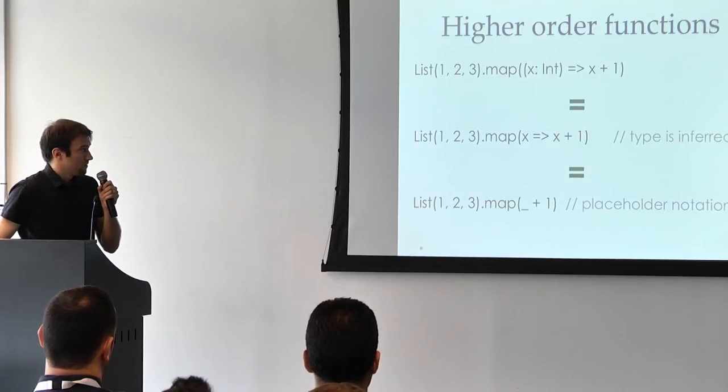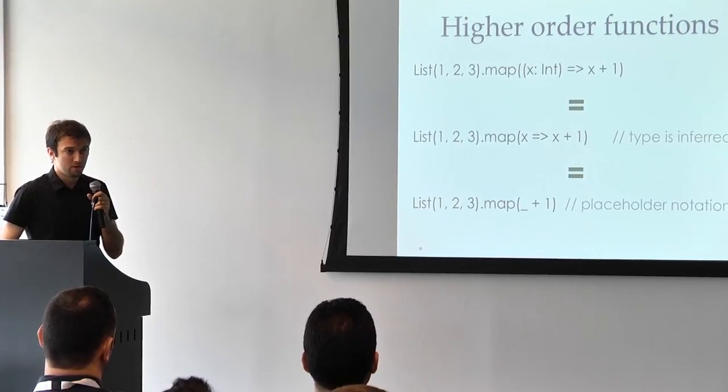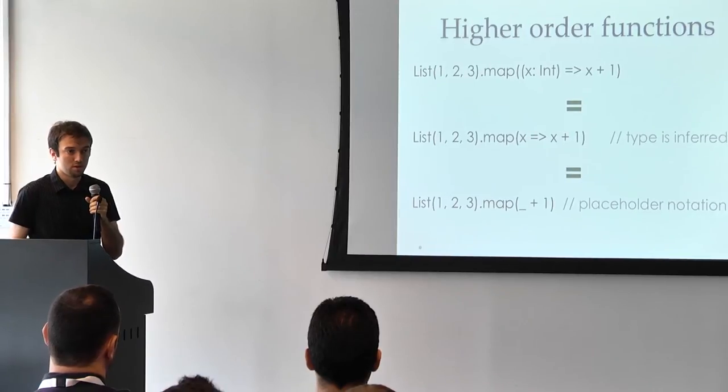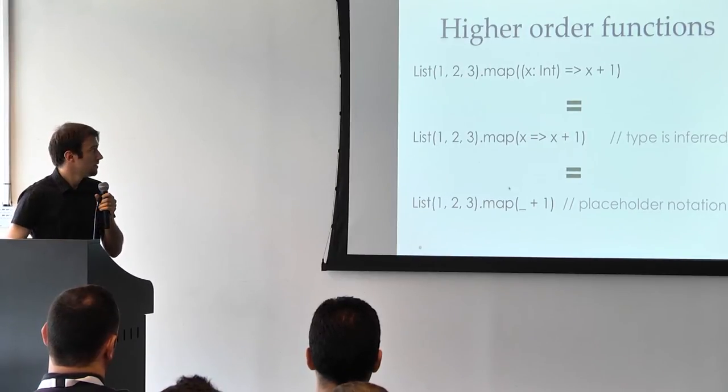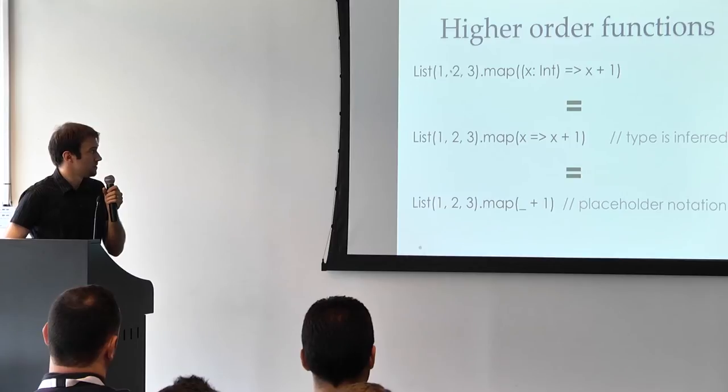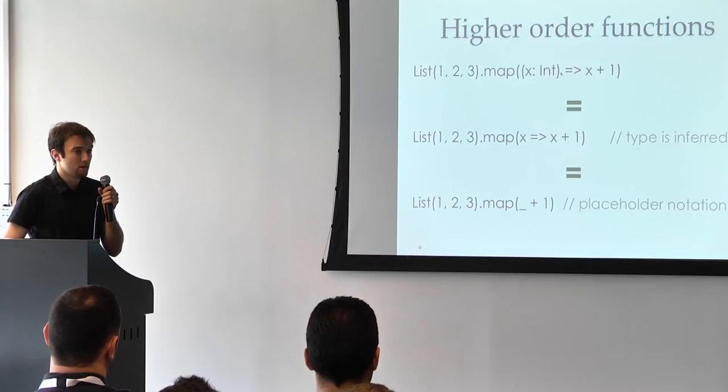We have higher-order functions in Scala. A function is a first-class citizen, which means that we can pass a function as a parameter. We can assign a function to a variable and so on. In this case, a very simple example, we want to add one to each one of the members of this list. So we basically define a lambda expression, lambda function, that adds this value.